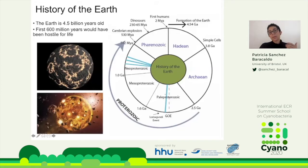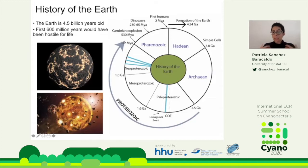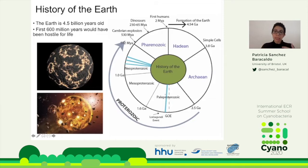Looking at the big picture of Earth history, the Earth is about 4.5 billion years old, which I'm representing with a circular diagram going from past to present. For the first 600 million years, life wasn't possible on our planet — the Earth was too hot, with the heavy bombardment period. We have evidence of life at around 3.8 billion years ago.